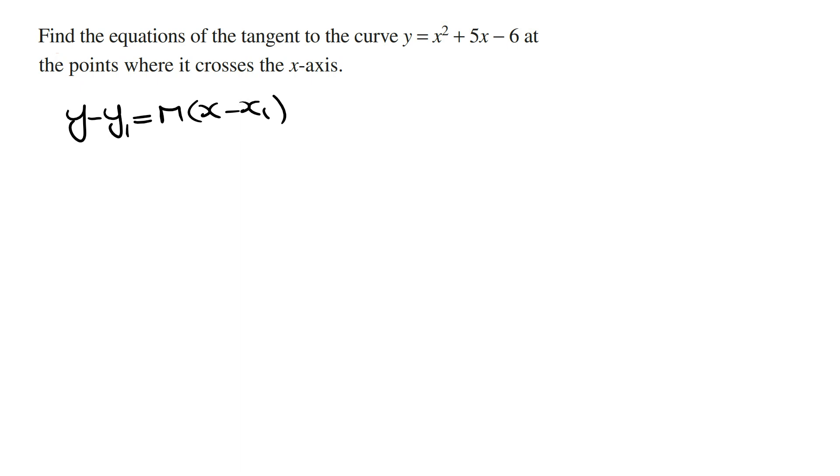For this question, we're asked to find the tangent lines where the curve crosses the x-axis, in other words the x-intercepts. To find the x-intercepts we let y equal zero and then solve for x. Doing this, we're going to get x squared plus 5x minus 6 equals zero.